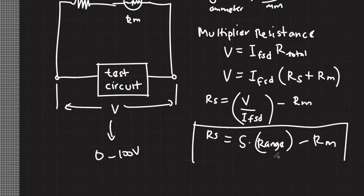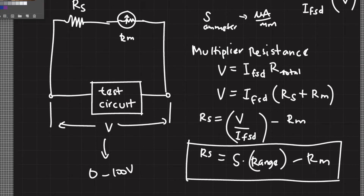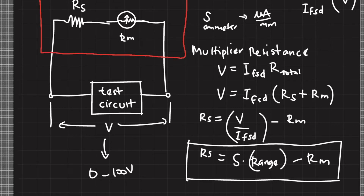If we want our voltmeter to handle 0 to 100 volts, we set V to the maximum, so R_s equals S times V minus R_m. This is our expression for multiplier resistance. In its simplest form, this is our voltmeter. If you want a voltmeter that can change its range of values, you apply the Ayrton design and have different values of multiplier resistance adjusted via a switch.